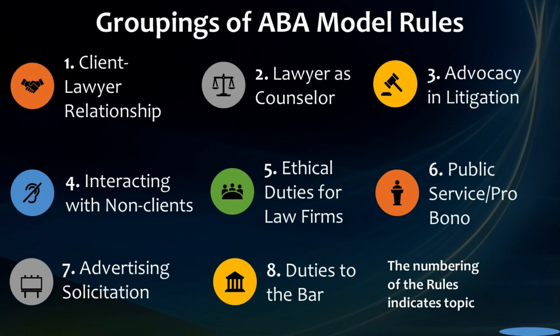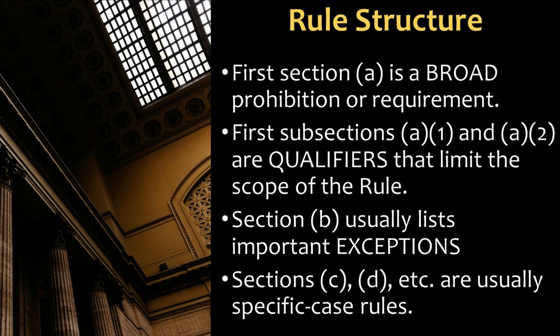Within each grouping, there will be several rules. Within each rule, you'll notice that there's a repeating structure in how they're drafted. The first section, the A section of each rule, is a broad prohibition or requirement — so it says a lawyer has to always do this or shall never do this. Typically in the A section there's an A1 and an A2, after the introductory sweeping generalization, that are qualifiers limiting the scope of the rule. Then Section B, in almost all the rules, will list the categorical exceptions to the rule. If there are other sections like C, D, or a few rules even going up to G or J, those are usually specific case rules — things that aren't exactly an exception but relate to a certain type of lawyer or a certain type of special client.